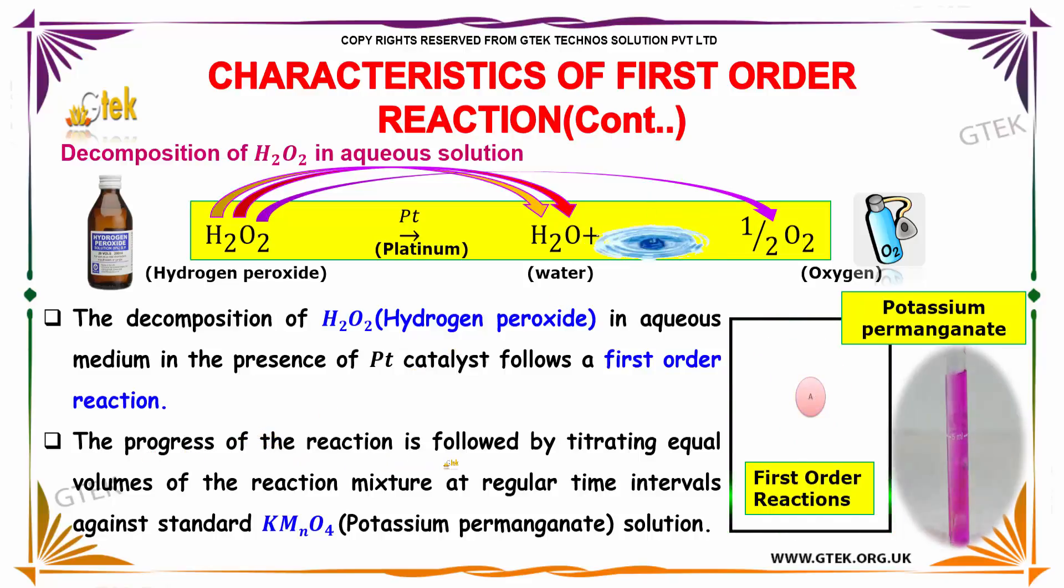The progress of the reaction is followed by titrating equal volumes of reaction mixture at regular time intervals against standard potassium permanganate (KMnO4) solution. It is not base, it is MnO4.